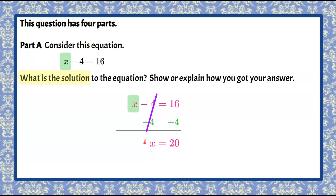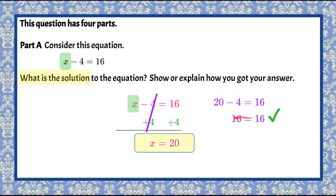By solving this way, our solution is X equals 20. Let's check our work to make sure we're accurate. We replace X with the value 20: 20 subtract 4 needs to equal 16. 20 subtract 4 is indeed 16, and it checks. Therefore, the solution to this equation is X equals 20.